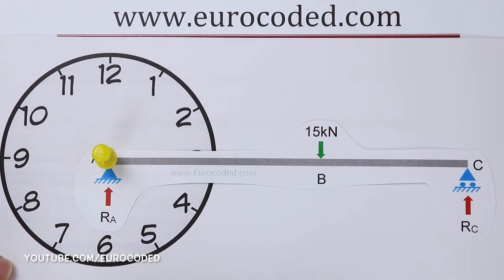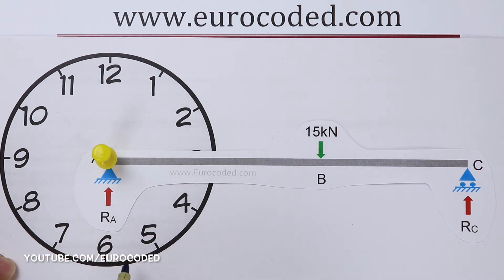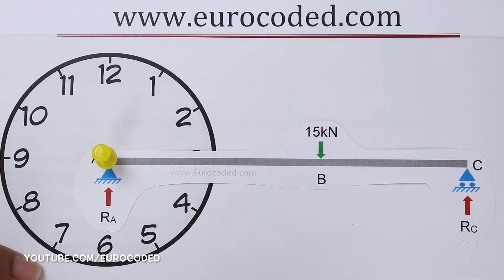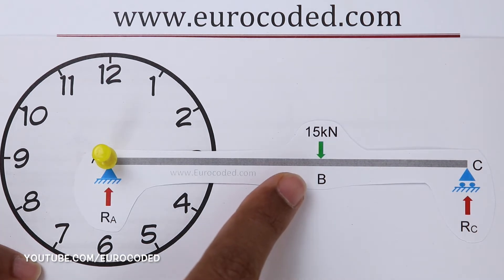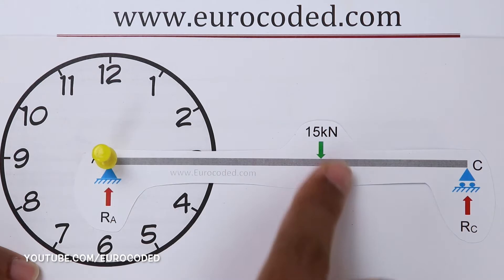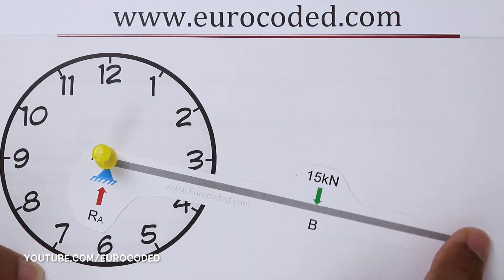An easy way to visualize this is to imagine that the point we are taking moments about is the center point of a clock face. Then consider our beam to be a clock hand. Looking at the likely direction of rotation due to this externally applied force, we can figure out whether this force would result in a clockwise or anticlockwise moment about the point we are taking moments about. This externally applied force would try to rotate this beam in this direction.